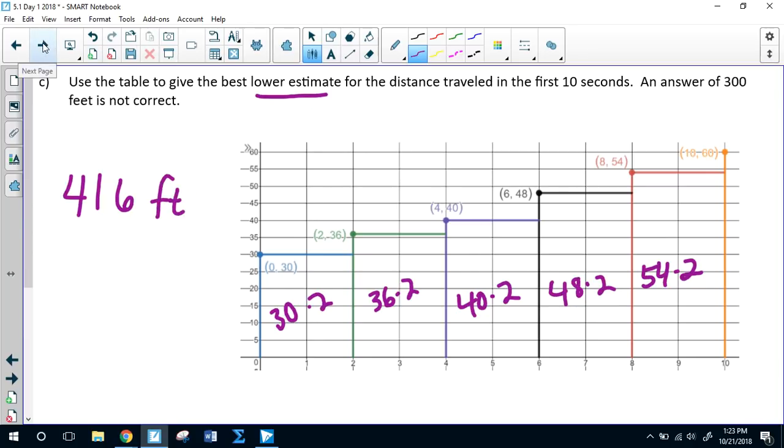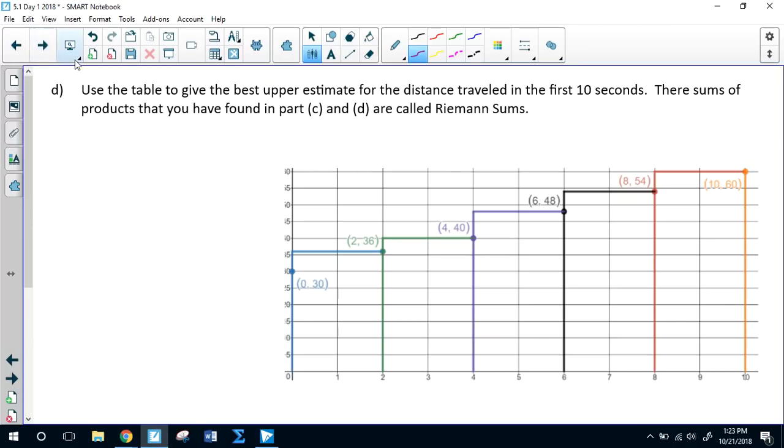So now we're going to do the same thing, but create rectangles starting on the other side of the picture. So we're going to, again, ignore this 0, 30, and instead create rectangles using the height on the right-hand side. So now my height of this right rectangle is 60, and then my next rectangle going to the left will be 54, 48, 40, and 36. So we used this side for each of the rectangles. So now it's 36 times two, 40 times two, 48 times two, 54 times two, and then 60 times two. Add these all up, and the distance that was traveled was 476 feet.